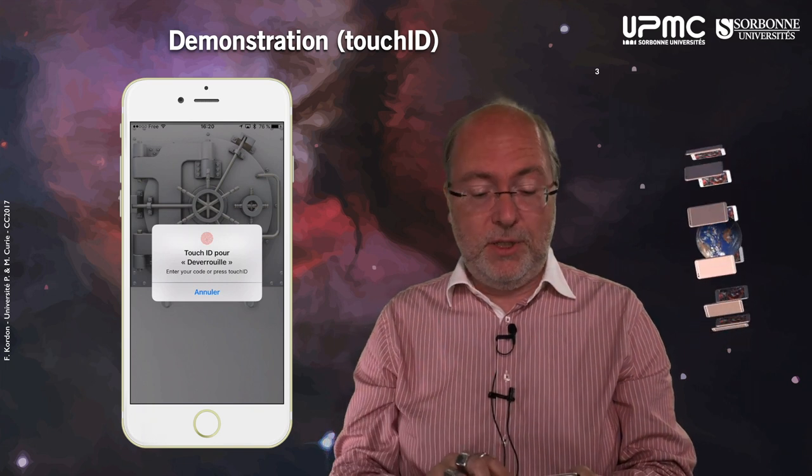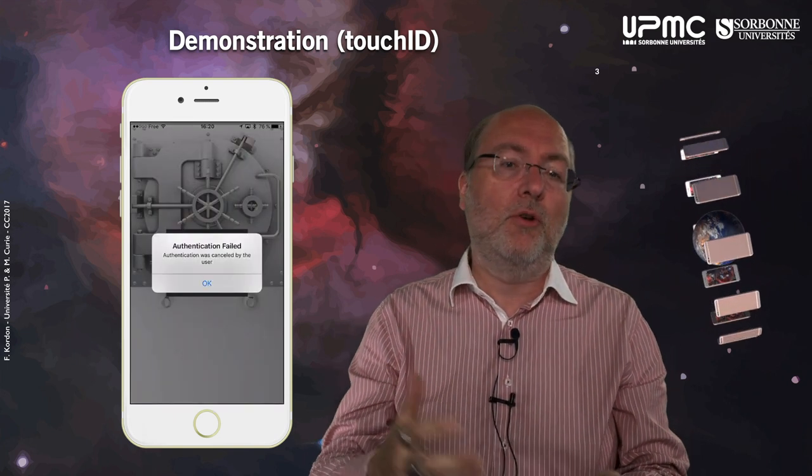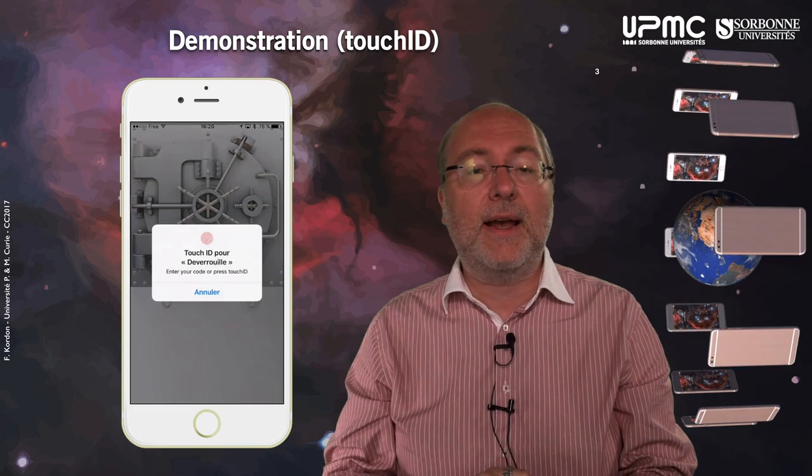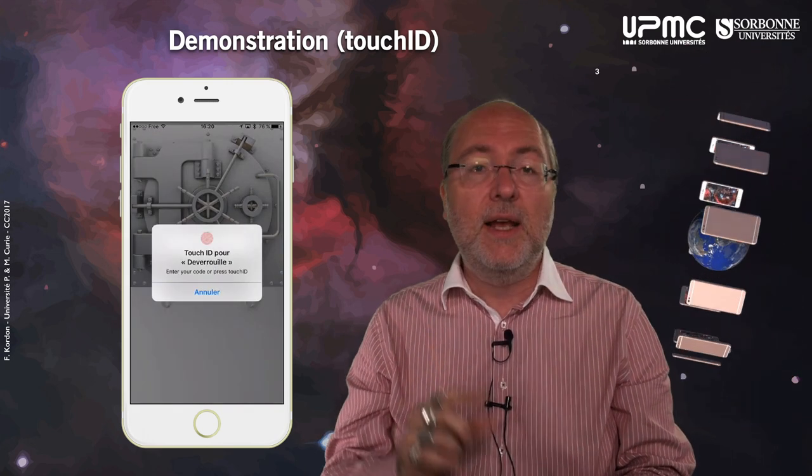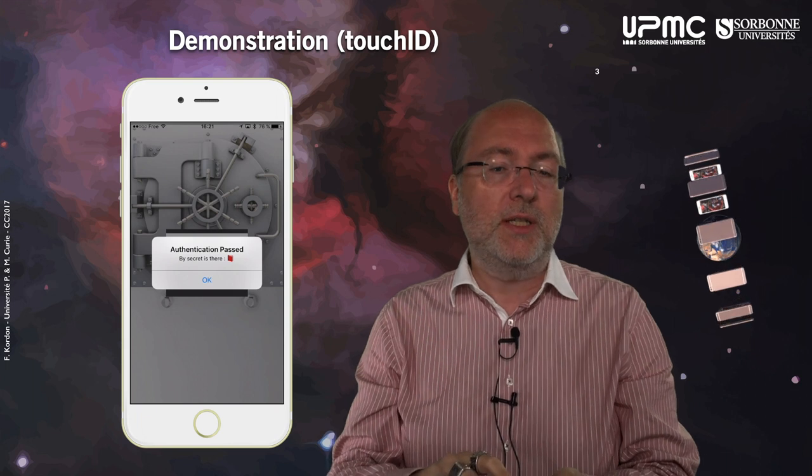Let's start the application. Here I can type unlock. What I will do is first try to cancel, and then I get the information that authentication failed. Then I can retry again. Since I have Touch ID and fingerprints are activated, I must do the fingerprint to access the information, which is the case here — everything is ok.